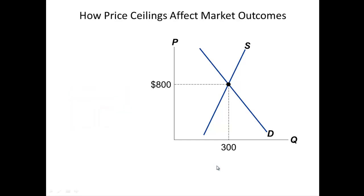In this example, the market price or equilibrium price is $800, and the market quantity or equilibrium quantity is 300. This is without any type of government intervention — the buyer and the seller negotiated a quantity of 300 at a price of $800.